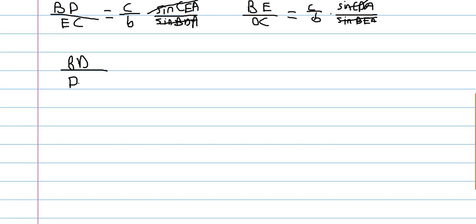So BD over DC times BE over EC is equal to c squared over b squared.